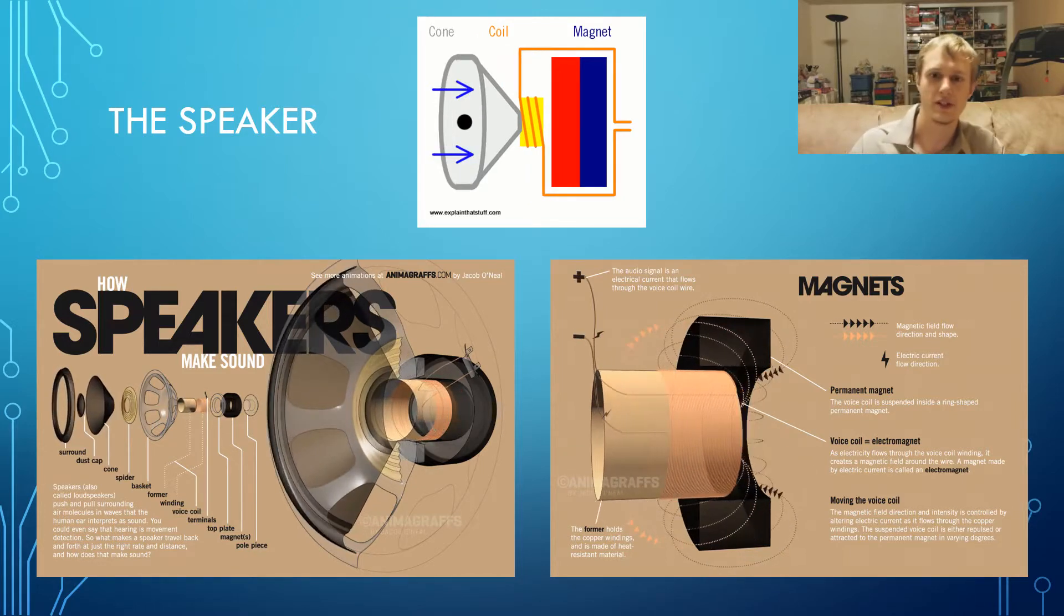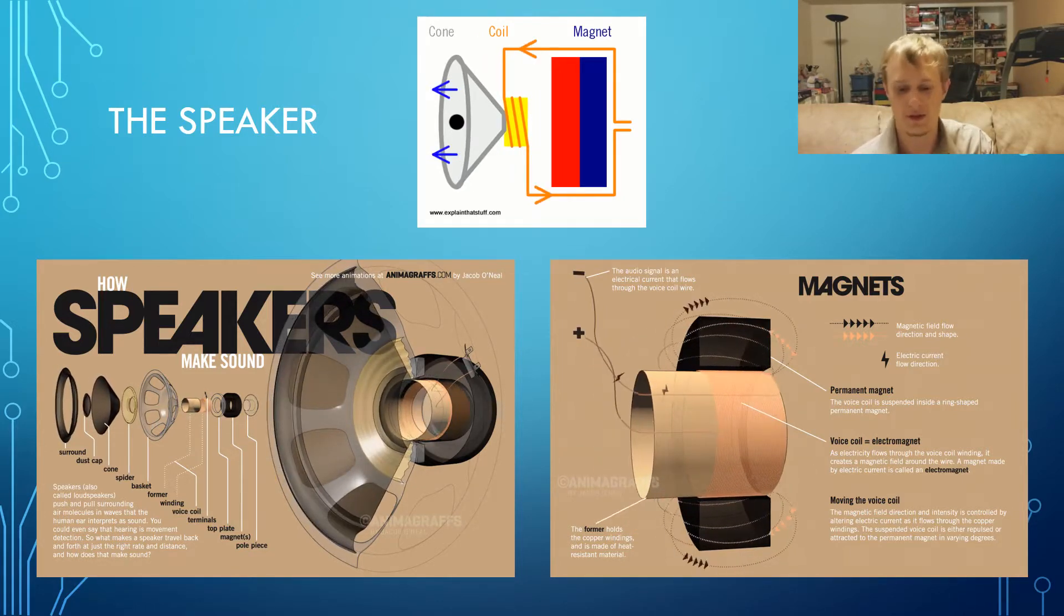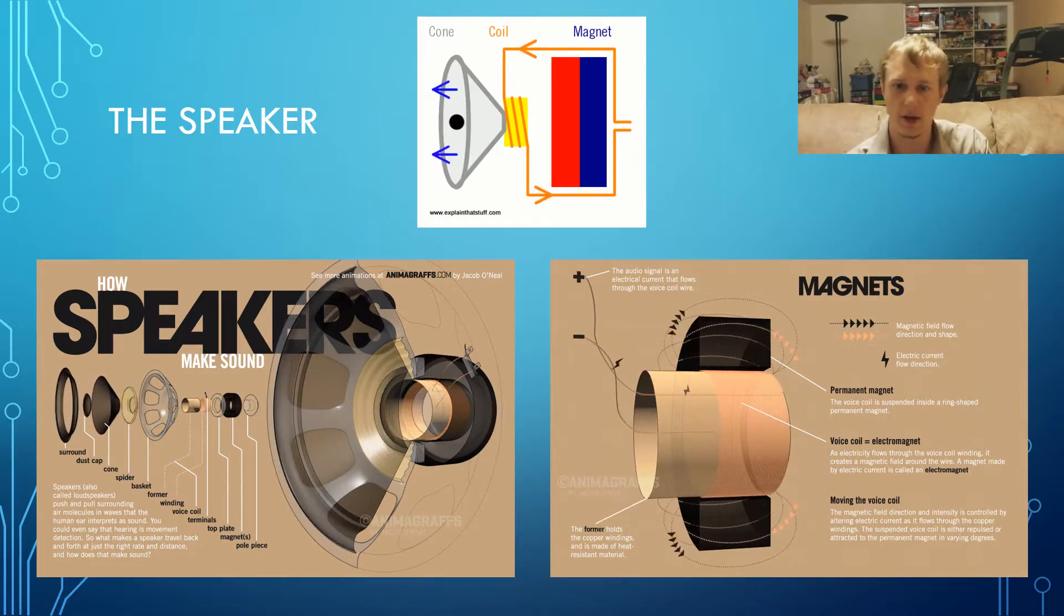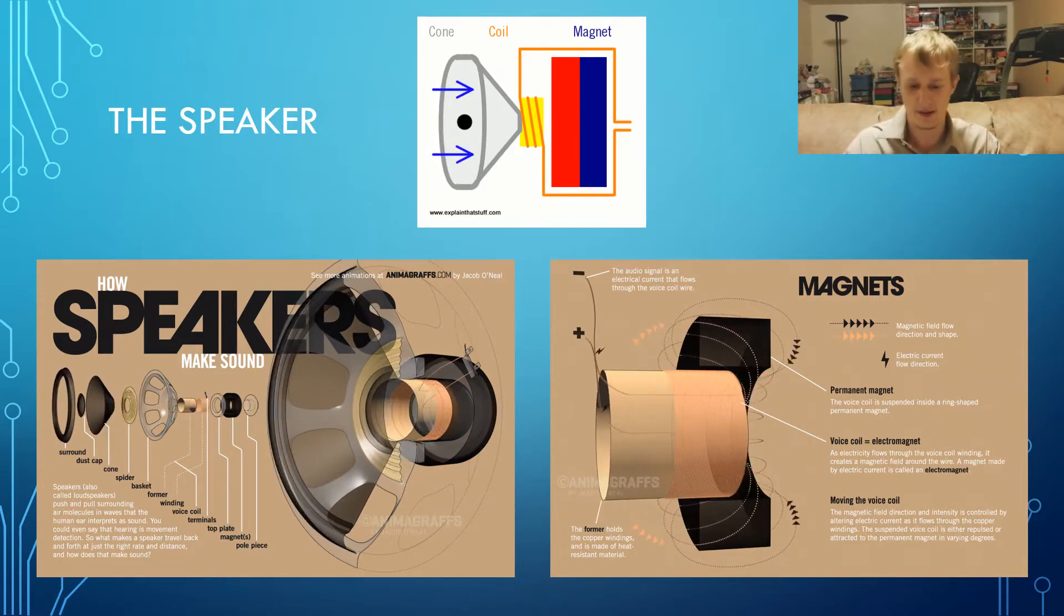The coil, which is usually made up of copper, is a solenoid which creates a temporary electromagnet when a current is run through it. When this coil becomes magnetized, it is attracted or repelled by the permanent magnet.